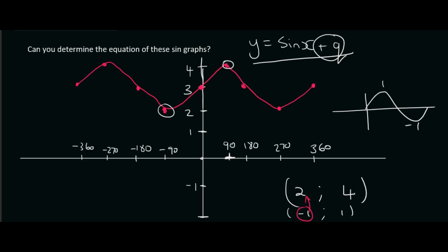So what have they done to each of these values? So to get from minus 1 to 2, you add 3. And to get from 1 to 4, you add 3. So they have clearly moved this graph upwards by 3. So its equation will be y equals sin x plus 3.